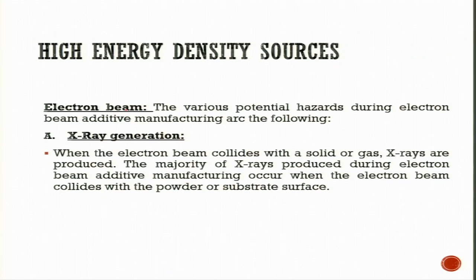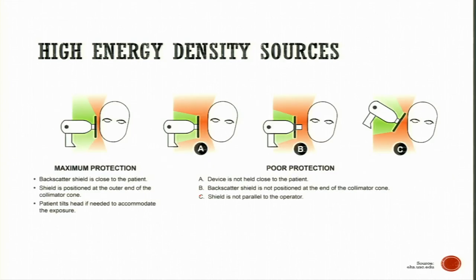High energy density sources other than lasers include the electron beam. Potential hazards during electron beam additive manufacturing include X-ray production when the electron beam collides with a solid, gas, powder, or substrate surface. If electron beam equipment is not sealed properly, X-ray leakage might expose the operator to harmful radiation. There is also a visible radiation hazard: the melt pool of molten metal in electron beam additive manufacturing emits intense light, and direct observation of this light harms eyesight. Lead glass in the electron beam viewport generally protects against IR or UV radiation generated during the process.